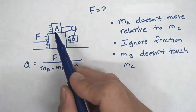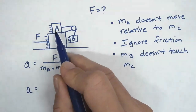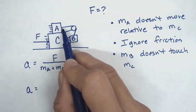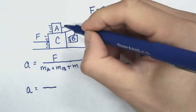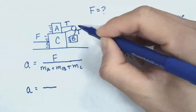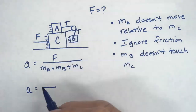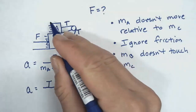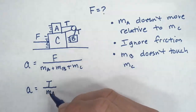Now I'm going to look at just box A. Box A has a rope pulling on it — I'm ignoring friction as given. The force pulling on A is a tension force. Since we assume a massless, frictionless pulley, that tension is the same throughout the rope. So for box A, the acceleration equals the tension force divided by M_A.